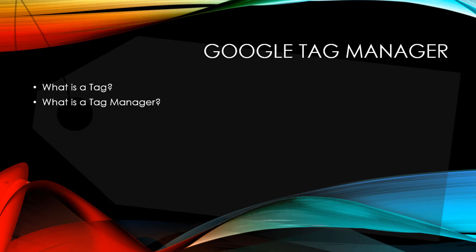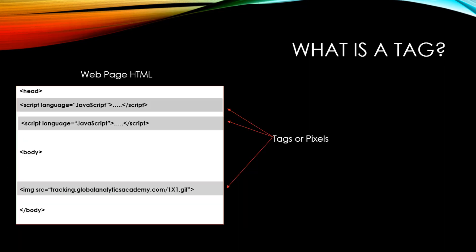Before we look at Google Tag Manager, or GTM — the short form for Google Tag Manager — let's talk about what a tag is and what a tag manager is. A tag is generally a piece of JavaScript code or an image that you need to put on your website for tracking or advertising purposes.